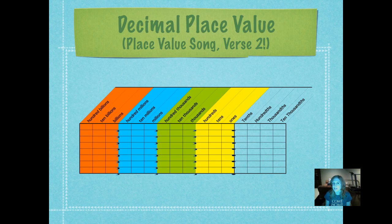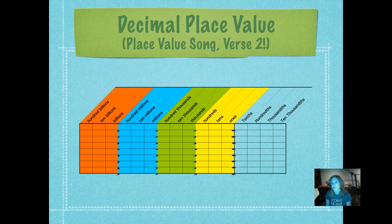Here's our decimal place value song that we've talked about for a couple of days. I'm going to be teaching you verse 2 today, which will teach you all of the place value positions on the decimal side. First, listen — I'll sing all of the whole number place value positions, the yellow, the green, and the blue, and then starting at the decimal, we're going to work our way to the right and sing those decimal place value positions. We're going to go further in the song than is on the chart, because the chart lists what you need to know in fifth grade, but if you know the song, you're going to know more than the average fifth grader.